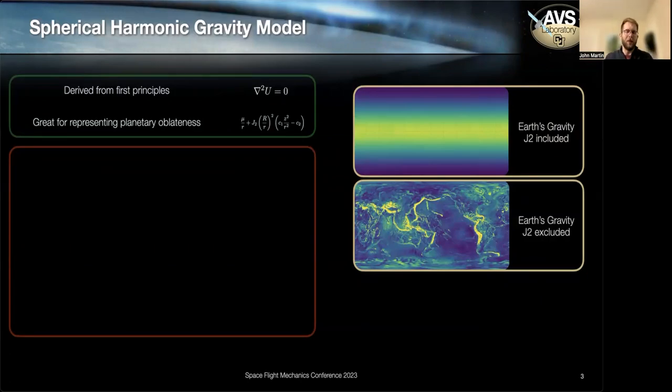But some of the disadvantages with spherical harmonics really come when you look at everything past J2. And I try and illustrate that in this figure on the right. So we have planetary oblateness for the Earth shown above. And then as soon as we strip that away and look at what remains, we have things like mountain ranges.